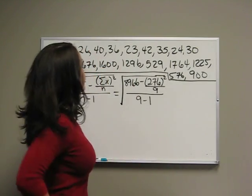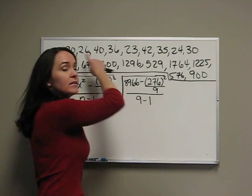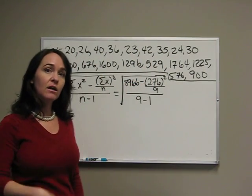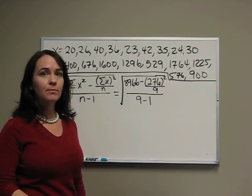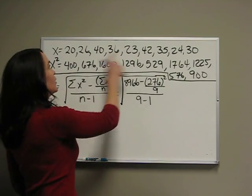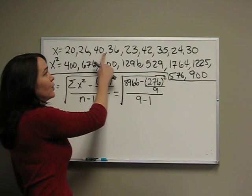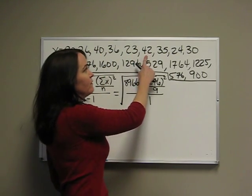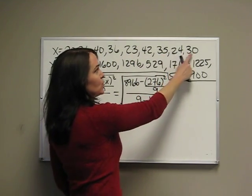Alright, so we're given some data. Our first row is the number of days taken off for a sample of 9 people. That's our first row: 20, 26, 40, 36, 23, 42, 35, 24, and 30.